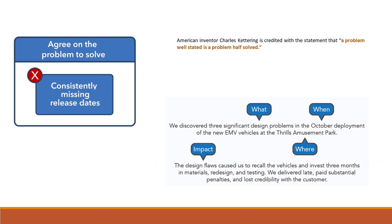So step one is agreeing on the problem to solve. Here we've got 'consistently missing release dates' as the sort of problem that someone has brought up. Our famous American inventor Charles Kettering said, 'A problem well stated is a problem half solved,' and so we've got a little diagram here on how to state a problem, using the what, when, impact, and where within the problem that we're trying to solve. That's the first focus: state the problem right and try to get a problem on the board.